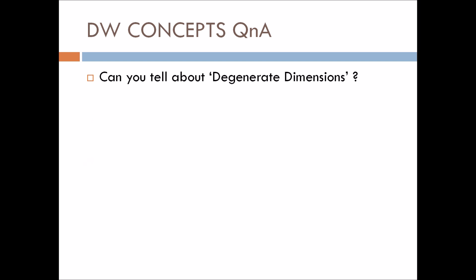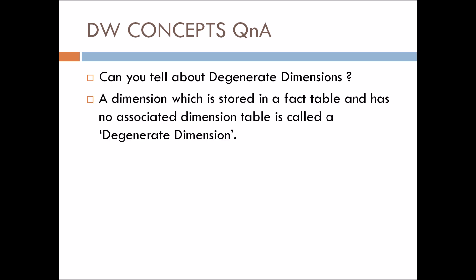Next question: can you tell about degenerate dimensions? A dimension which is stored in a fact table and has no associated dimension table is called a degenerate dimension. In fact tables, there are many columns apart from the foreign key columns linking to dimension tables — the columns not used for creating any relationship with other dimension tables are called degenerate dimensions.